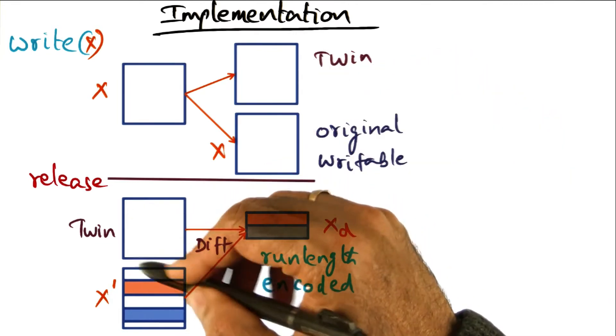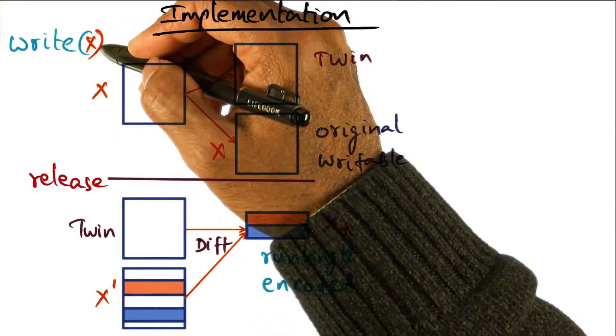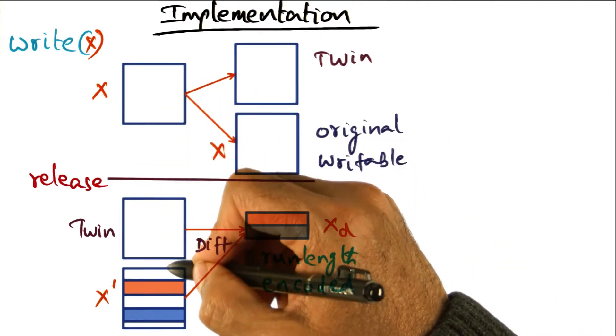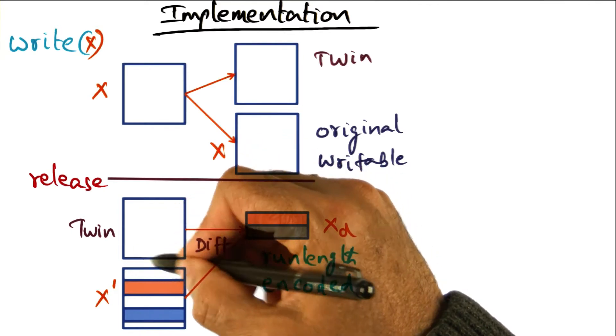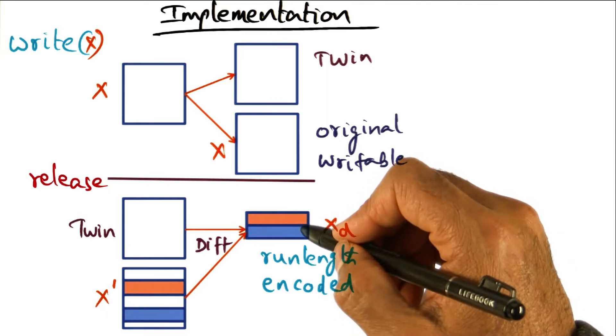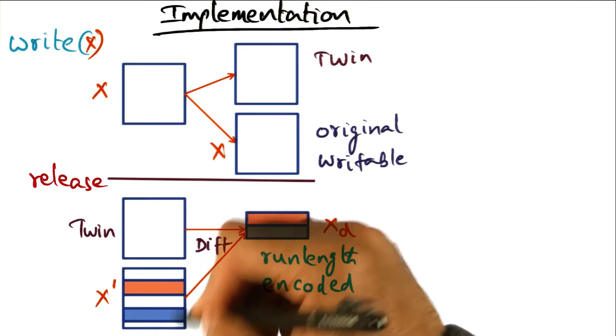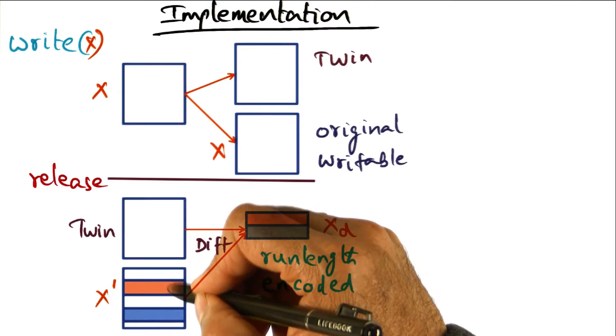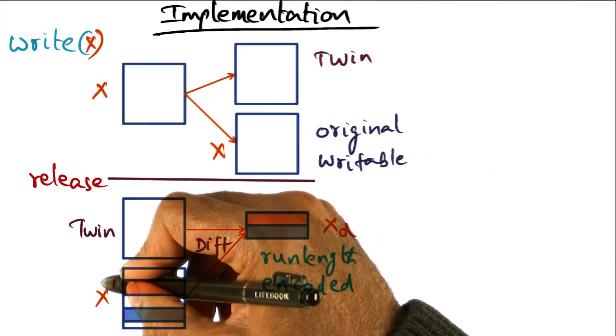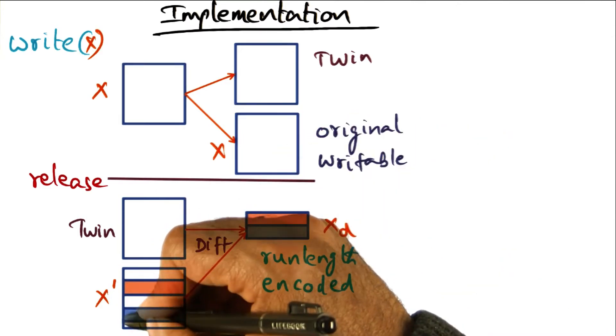And this is the twin which is containing the page as it was before this thread started writing to it. So the DSM software at the release point is going to compute the diff between the original copy of the page and the modified copy of the page. And the diff is going to be computed as a run length encoded diff, meaning that all of the page has not been modified. It's only this portion and this portion of the page that have been modified. So the diff is going to be computed as, oh, the page has changed starting from here, up until here. And starting from here, up until here.